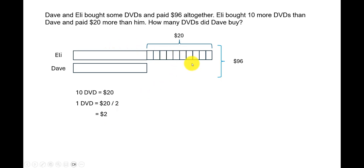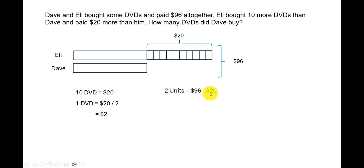Now in this diagram, if we remove the extra portion that Eli has — the 10 DVDs — then the total cost would become 96 minus 20. That will be equal to the two equal-sized units remaining, so those two units equal 96 minus 20, which is $76.